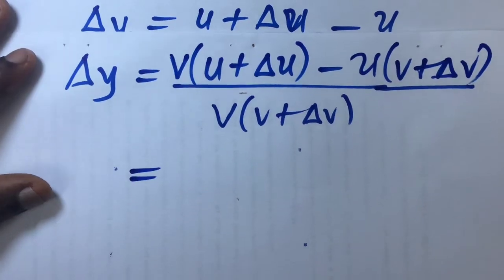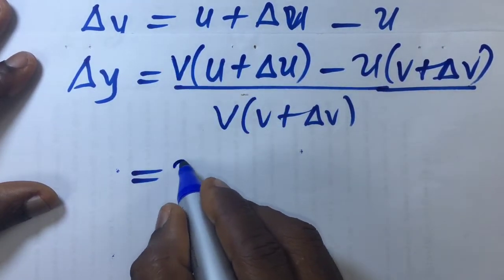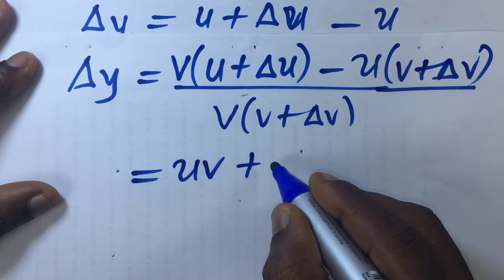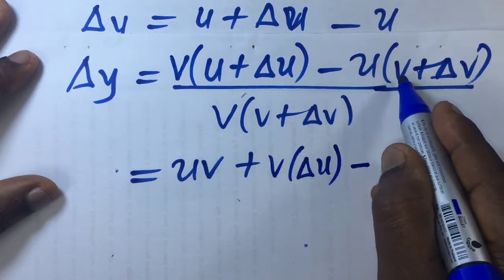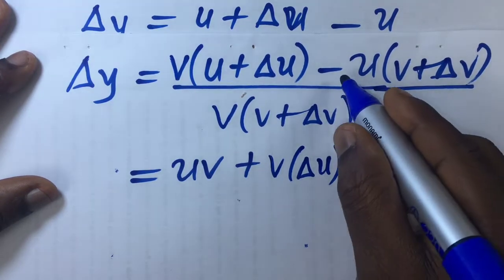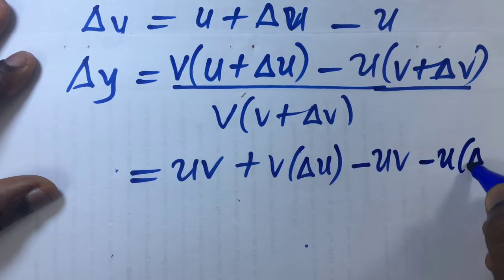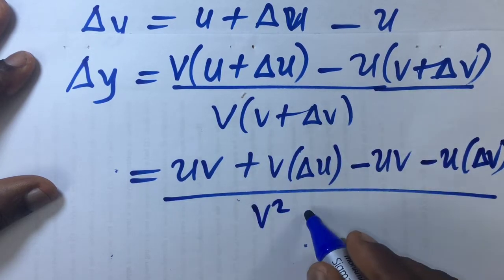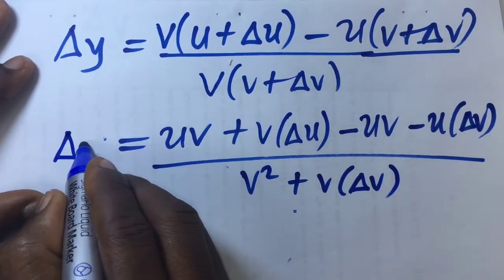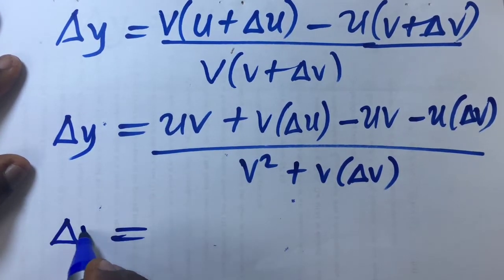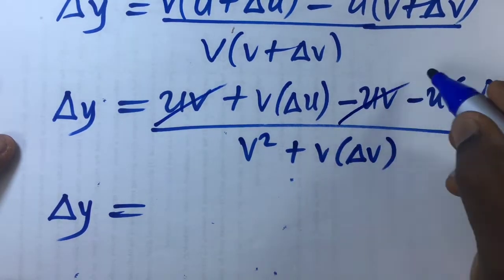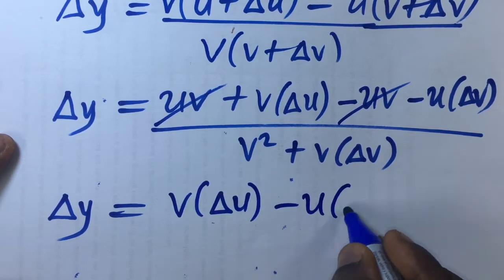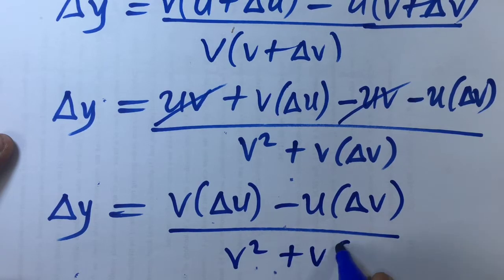Continuing the simplification: v multiplies the bracket to give uv plus v·delta u, minus u multiplies v to give uv, minus u multiplies delta v to give minus u·delta v. This is all over v times v which is v squared, plus v·delta v. The uv terms cancel out, leaving us with v·delta u minus u·delta v, all over v squared plus v·delta v.